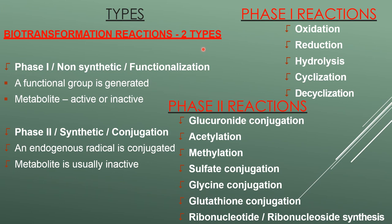There are two types of biotransformation reactions. Phase one is also called non-synthetic or functionalization. In phase one, a functional group is generated, and the metabolite produced can be in either active or inactive form. Phase two is also called synthetic or conjugation, where an endogenous radical is conjugated and the metabolite is usually in an inactive form.